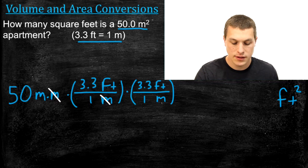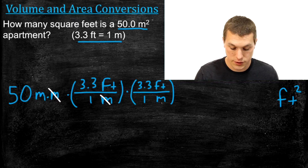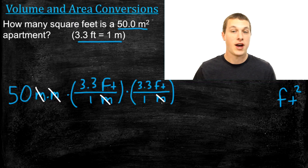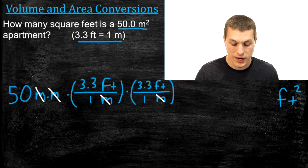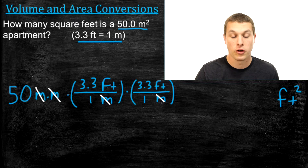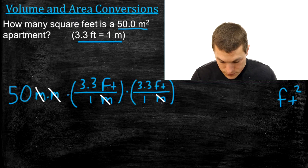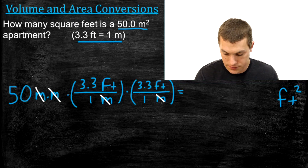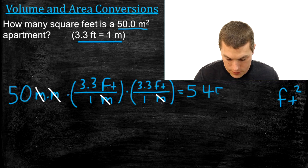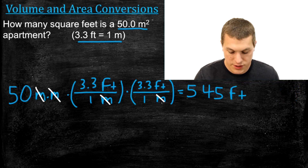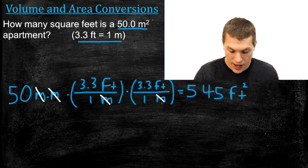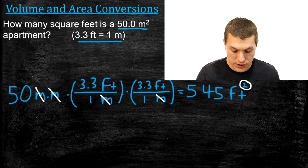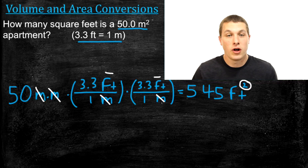When we cancel out units, the first meters cancels with the first conversion factor and the second meter cancels with the second conversion factor. We've gotten rid of meters entirely and we're left with feet once, feet twice — or feet squared. Now we multiply 50 by 3.3 and then by 3.3 again. Taking significant figures into account, we get 545 feet squared. The reason there are only three sig figs is because 50.0 meters squared has three sig figs.